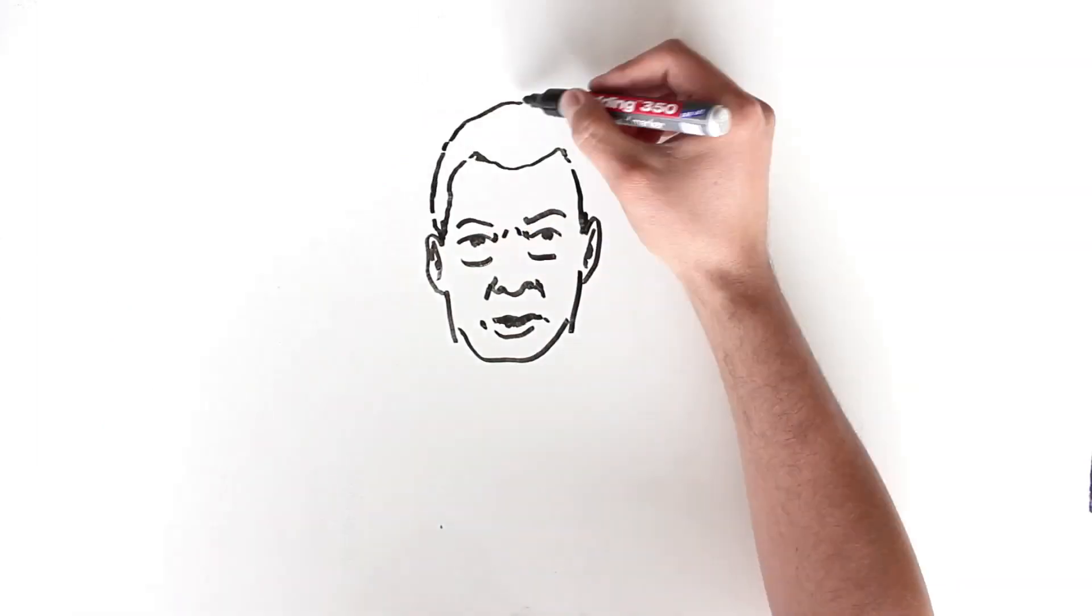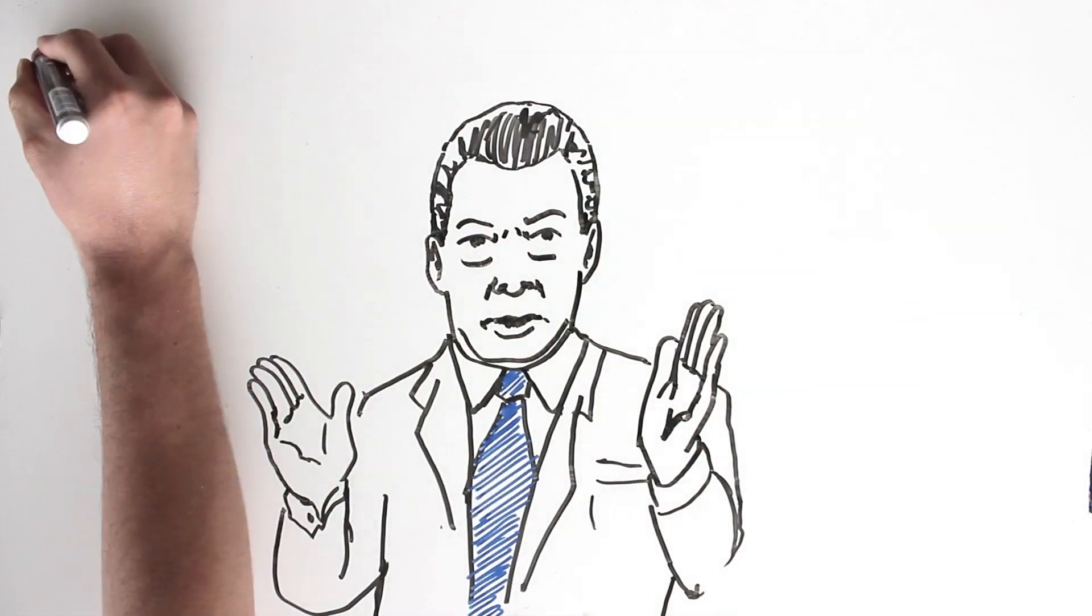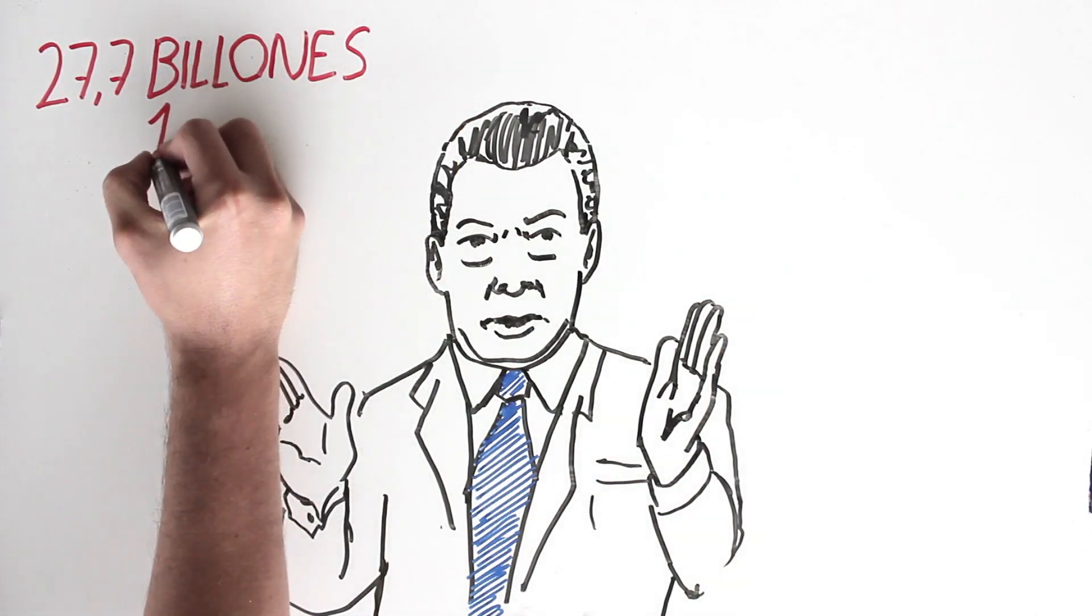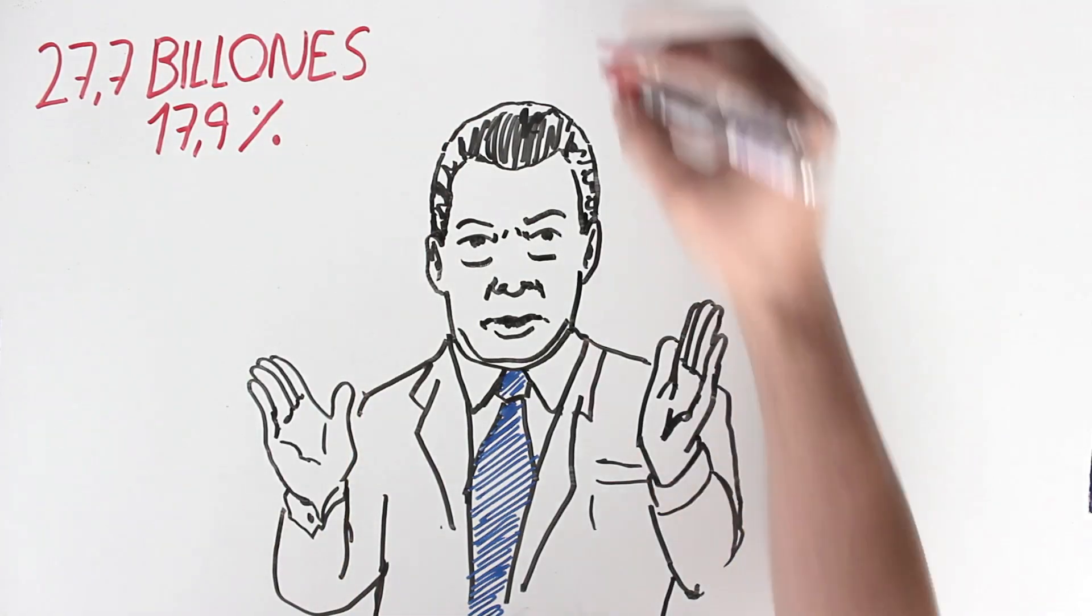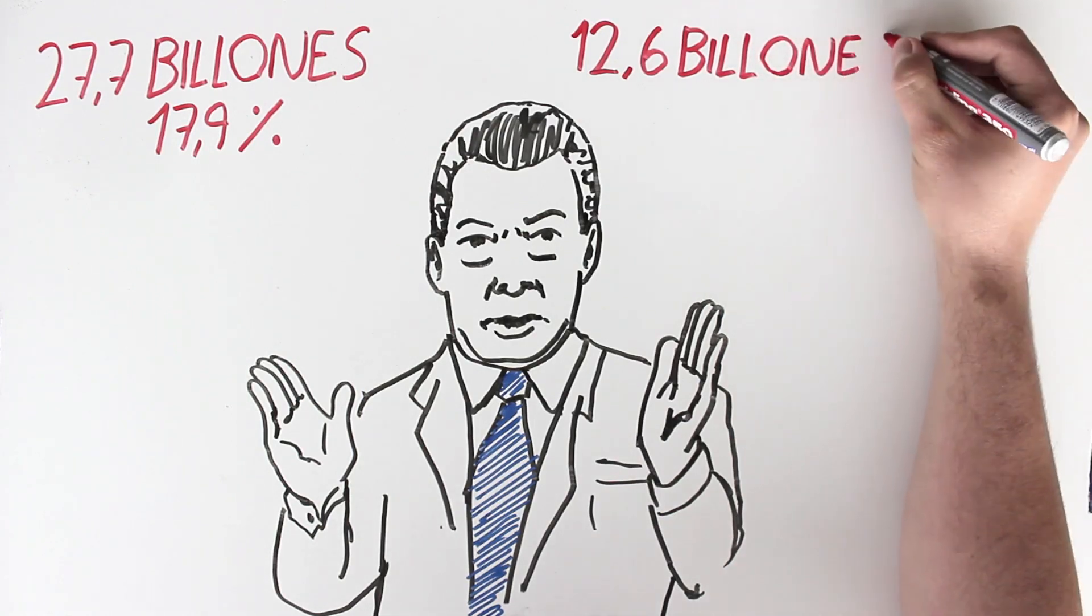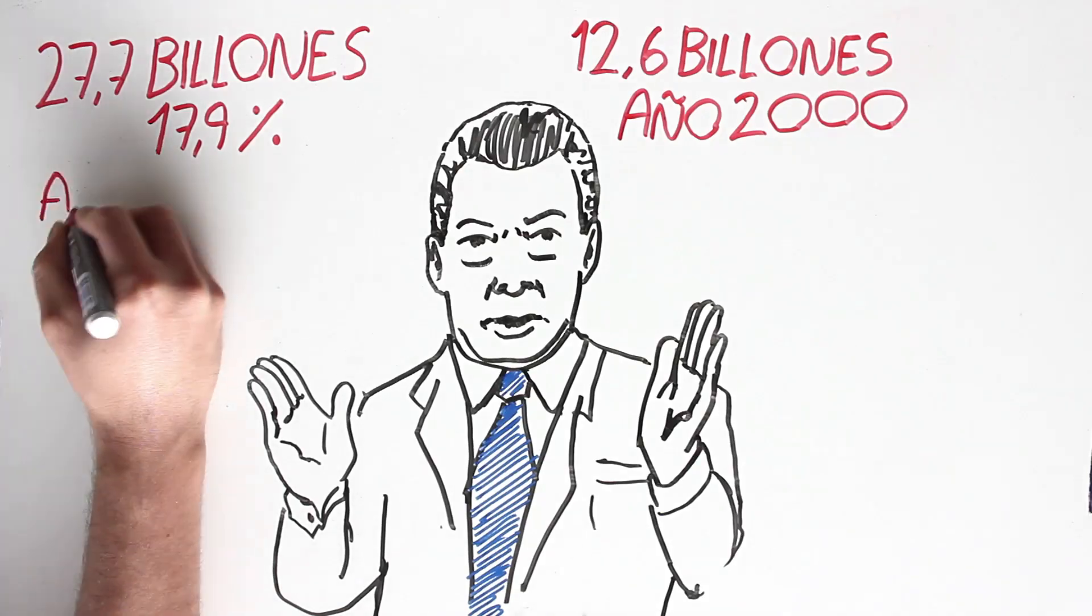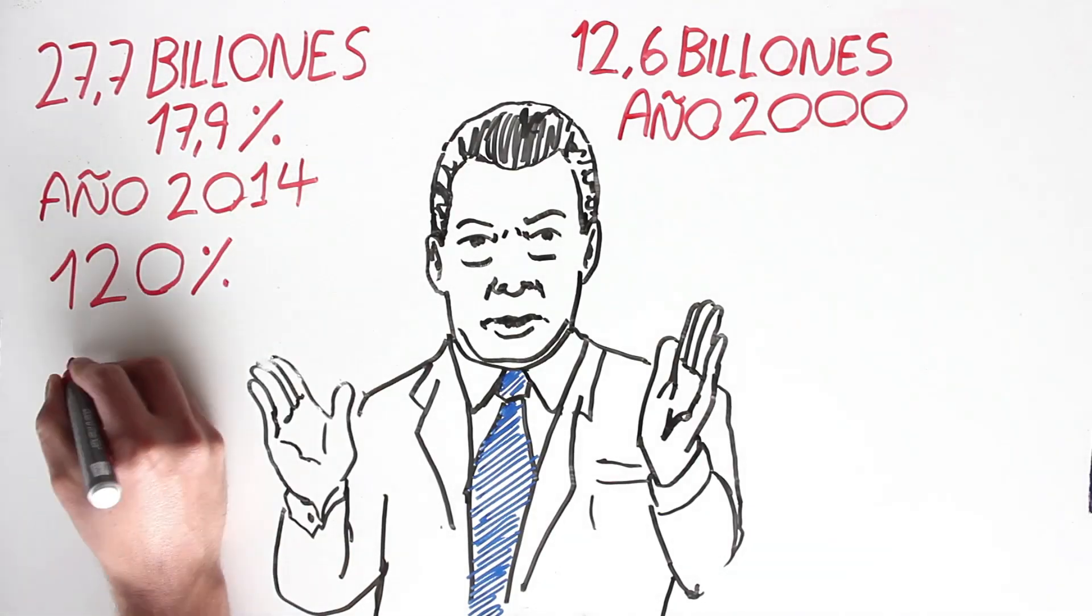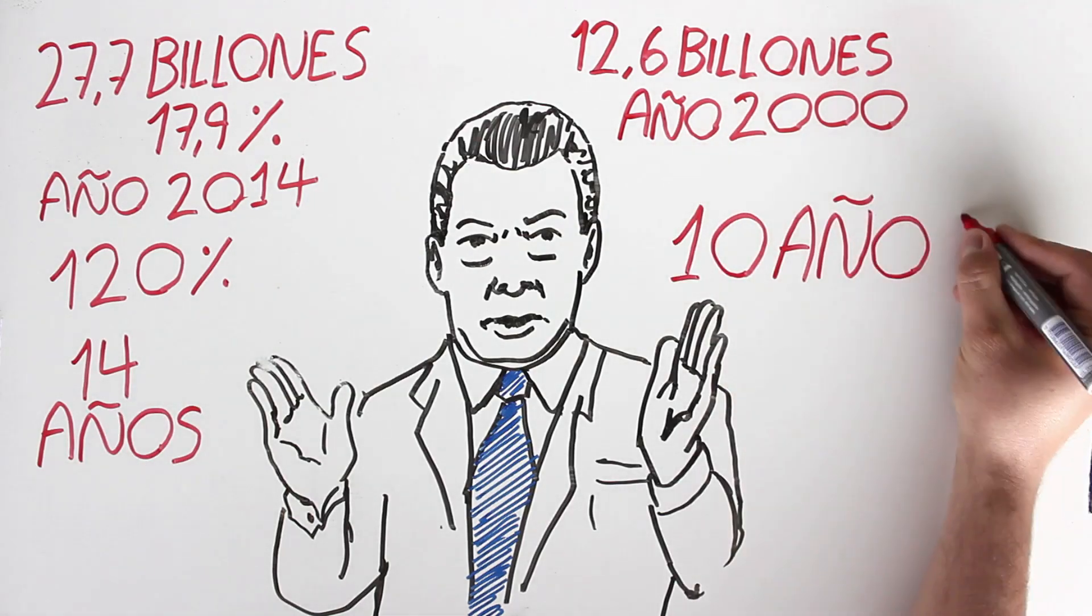Para este primer año del gobierno del presidente Juan Manuel Santos se destinarán 27,7 billones de pesos, lo que representa el 17,9% del presupuesto nacional. El escalamiento vertiginoso del presupuesto militar ha pasado de 12,6 billones en el año 2000 a 27,7 billones para el 2014, lo que muestra un aumento del 120% en 14 años. El presupuesto de guerra se duplica cada 10 años.